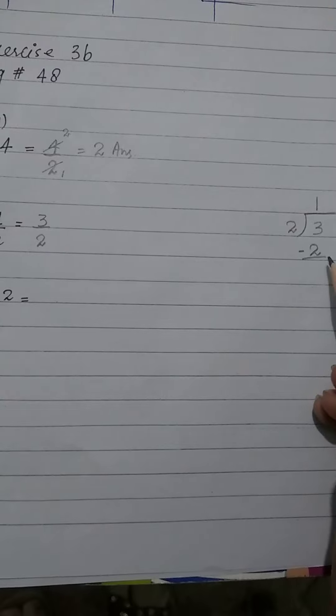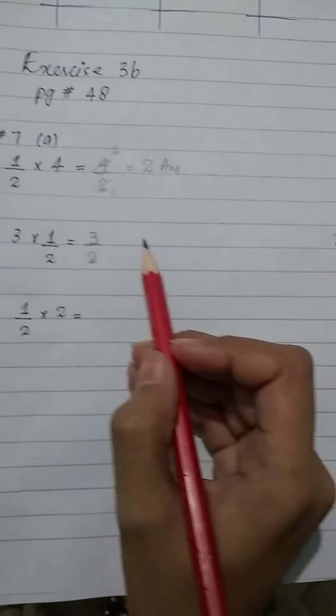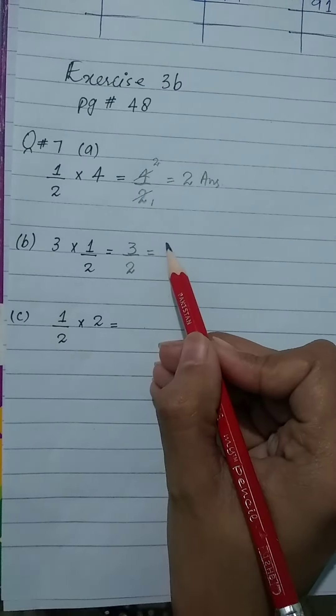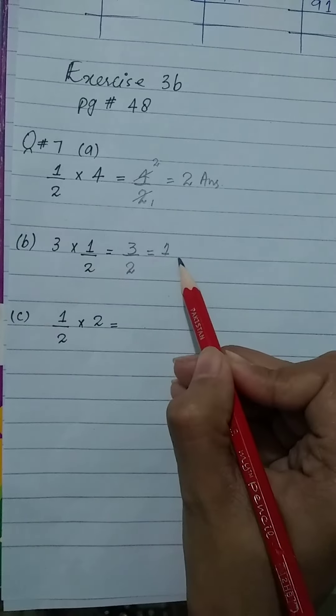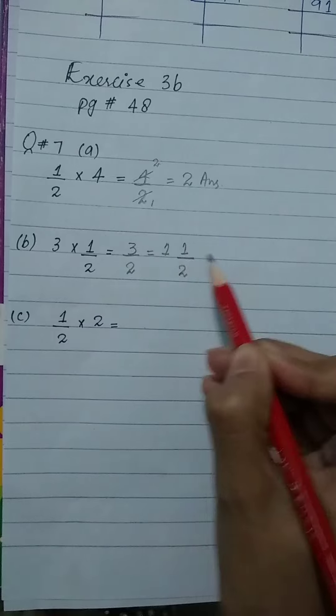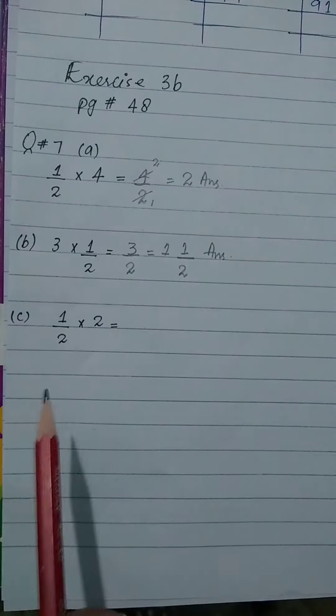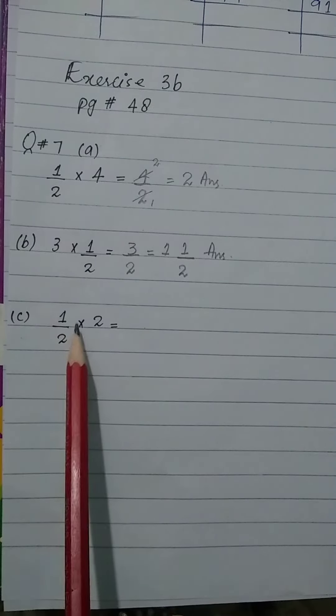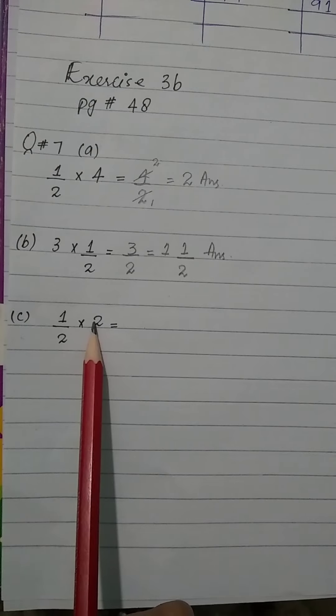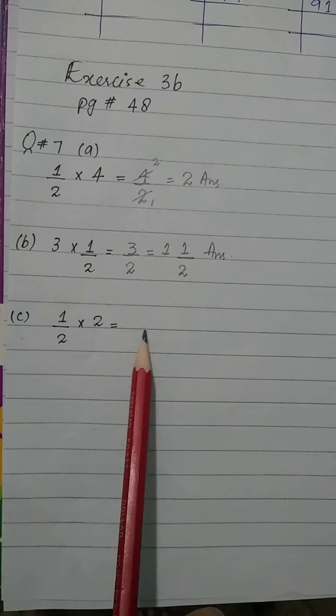3 minus 2 remaining 1. Now look at the third part. The answer is 1 and a half.